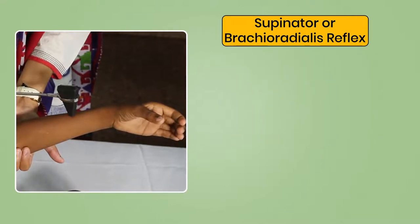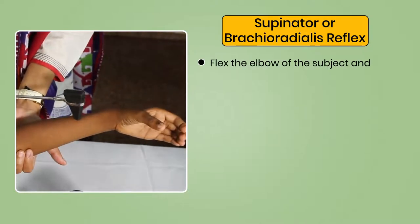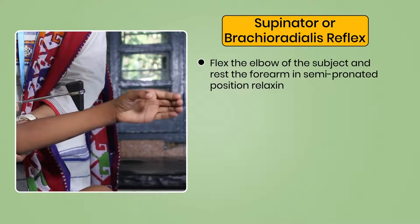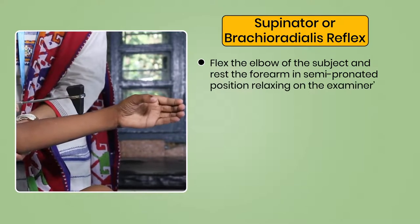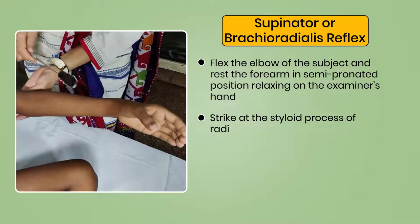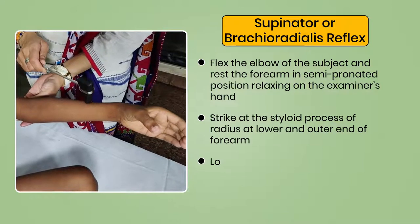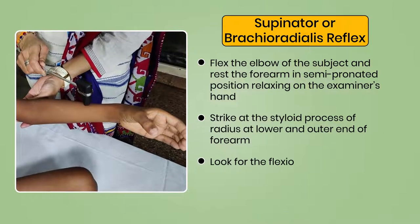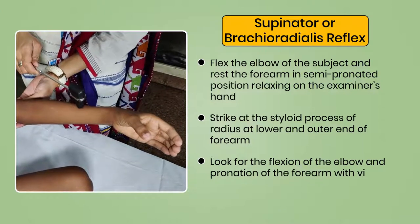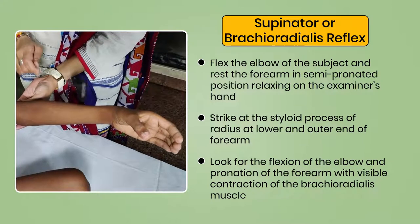For the supinator or brachioradialis reflex, flex the elbow of the subject and rest the forearm in a semi-pronated position relaxing on the examiner's hand. Strike at the styloid process of the radius at the lower and outer end of the forearm. Look for flexion of the elbow and pronation of the forearm with visible contraction of the brachioradialis muscle.